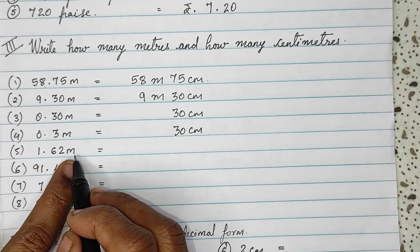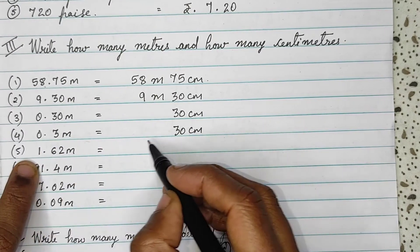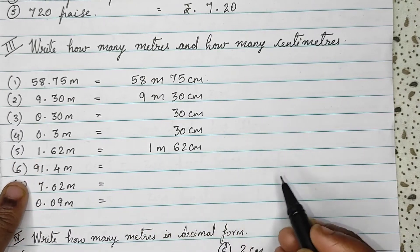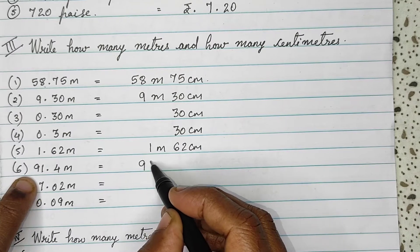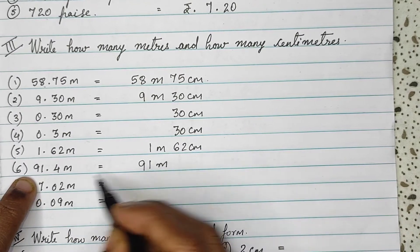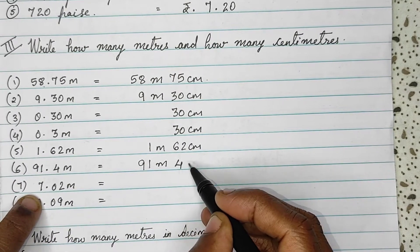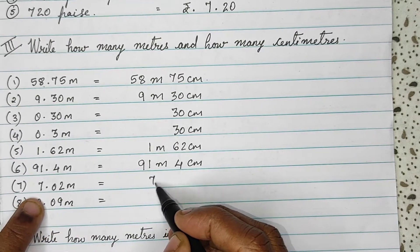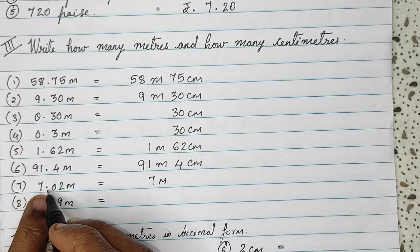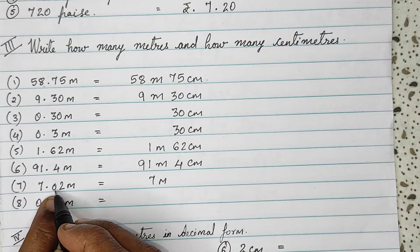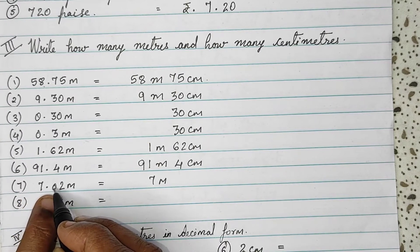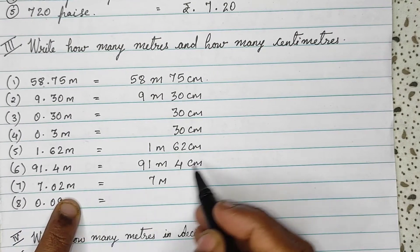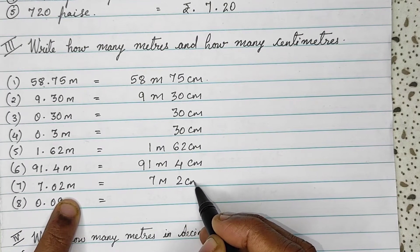1.62 — that means 1 meter and 62 centimeters. Then 91.4 — 91 meters and 4 centimeters. Then 7.002 — before the decimal there is 7, after the decimal there is 0, 0, and then 2. That means 2 centimeters. And 0.09 — 0 has no value, so there is no meter, and 0.09 means 9 centimeters, not 90.